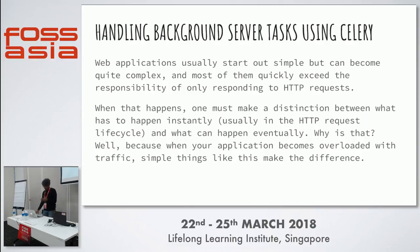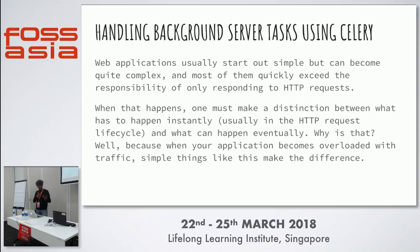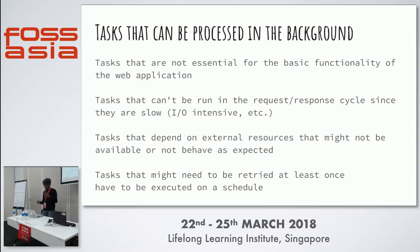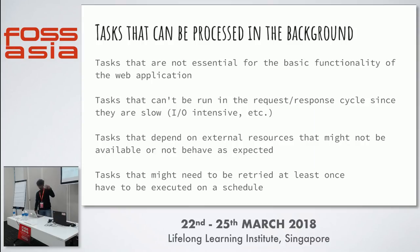Web applications start out simple but can become quite complex, and most exceed the responsibility of simply responding to HTTP requests. When that happens, you must distinguish between what has to happen instantly and what can happen eventually. If you need something instantly, you use background asynchronous servers. Tasks suited for background processing include those not essential to basic web application functionality, slow tasks that shouldn't block the request-response cycle, tasks dependent on unreliable external resources, and tasks that need to be retried or executed on schedule.